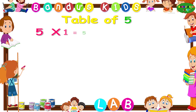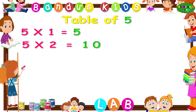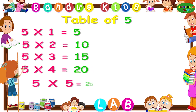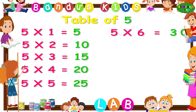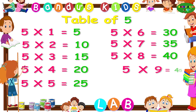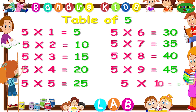Five ones are five. Five twos are ten. Five threes are fifteen. Five fours are twenty. Five fives are twenty-five. Five sixes are thirty. Five sevens are thirty-five. Five eights are forty. Five nines are forty-five. Five tens are fifty.